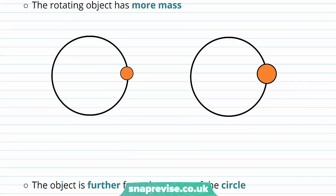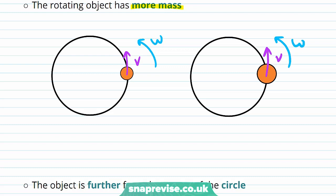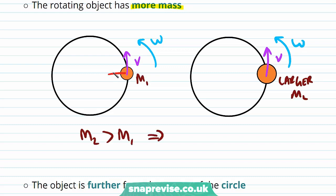The centripetal force will also increase if the rotating object has more mass. So in this case, if the two objects have the same velocity and the same angular velocity, but one of them has a greater mass, the force on the larger mass is going to be greater than the force on the smaller mass.